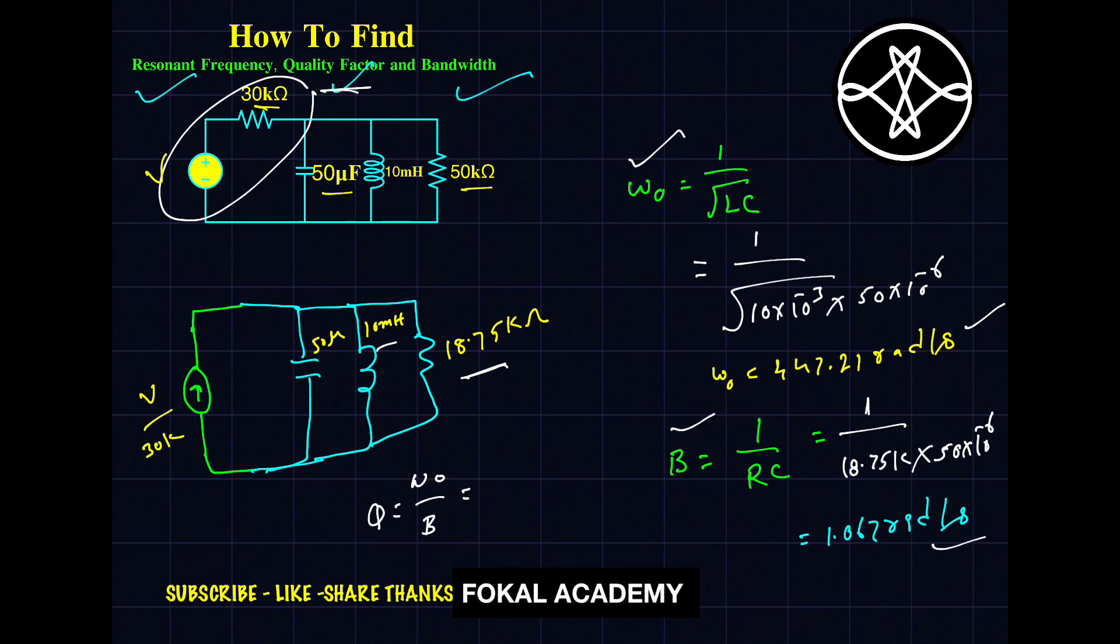That is 447.21 upon 1.067. By simplifying this, we will get 419.13. So this is the quality factor, this is the resonant frequency, and this is the bandwidth for the given problem.